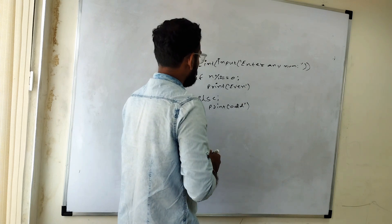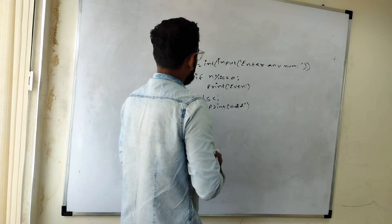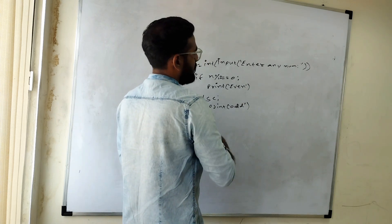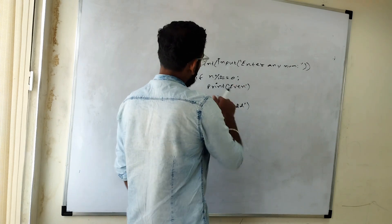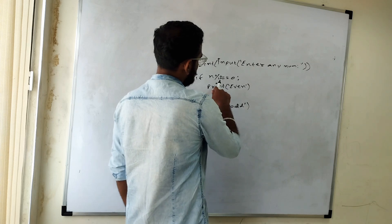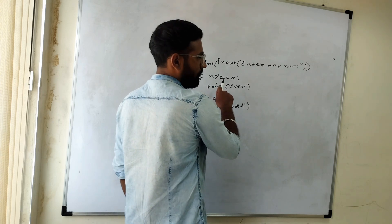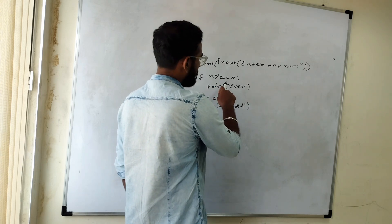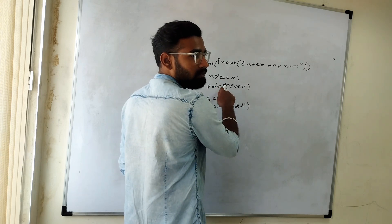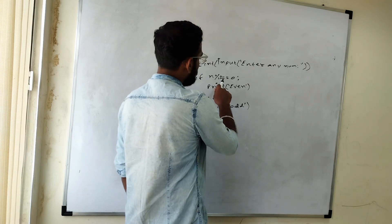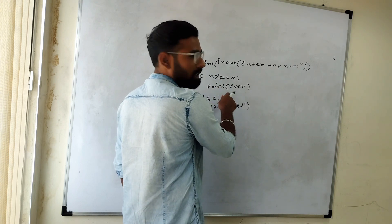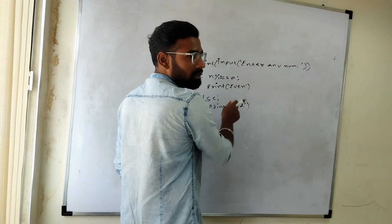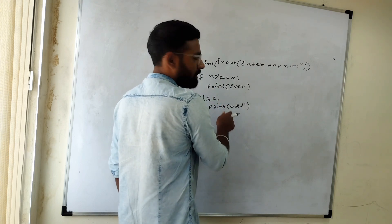Can you explain that line by line? So the first line, you are taking input, right — that is correct. Then what are you doing in the second line? In the second line, we are checking the remainder — if the number is divisible by 2, then it is even. If it is not, it is odd.